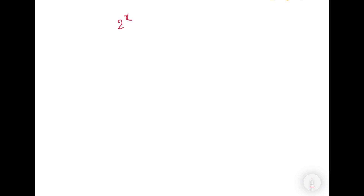Our question is 2 to the power x minus 2 to the power y is equal to 2032. We have to find the value of x and the value of y. It is a very interesting question since there is only one equation and from one equation we have to find the value of 2 variables. Let us solve this question.